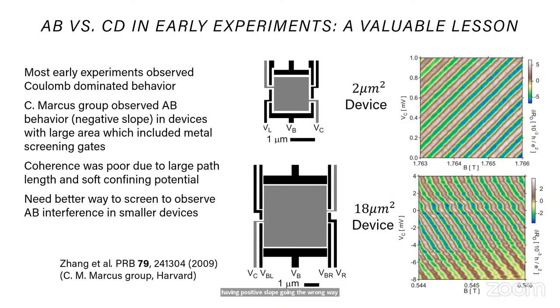Now, the problem is it's kind of far away from their actual 2DEG. But nevertheless, they measured this small device, and no matter what they did, they always saw this Coulomb-dominated behavior, the lines of constant phase having positive slope going the wrong way. Now, they made a ginormous interferometer as well, 18 micron square area, again with the gate. And here, they saw the first signs of AB oscillations, lines of constant phase with negative slope.